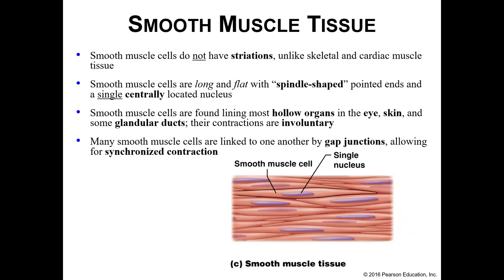Smooth muscle has no striations, which gives it the smooth appearance. These muscle cells are long and flat with a spindle-shaped appearance, meaning they're a little thicker in the middle and get skinnier out to both sides. The nucleus is fairly large and centrally located, and you only have one per cell. You find smooth muscle in your organs, your eyes, skin, glands, and all kinds of places, and again the contractions here are involuntary. Many smooth muscle cells are also full of gap junctions between neighboring cells, which allows for synchronized contraction similar to your heart.